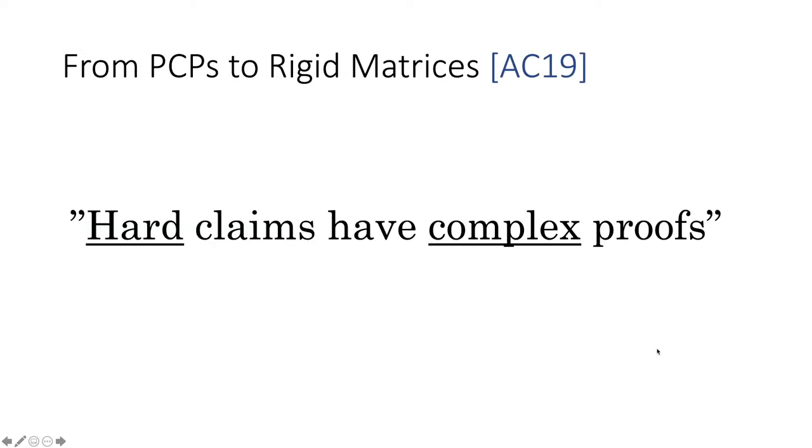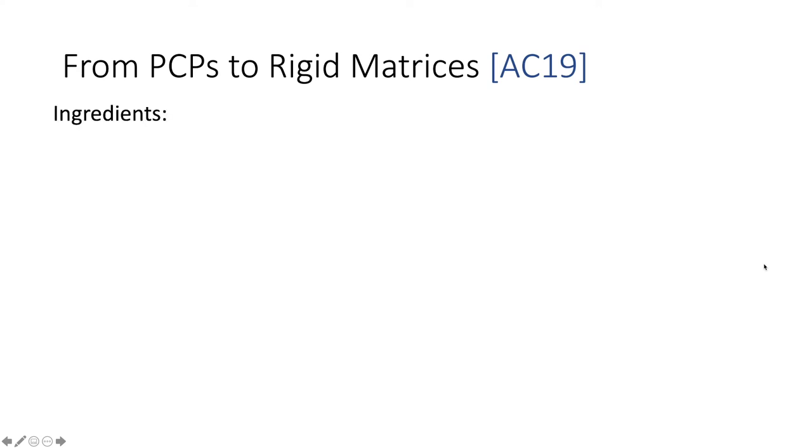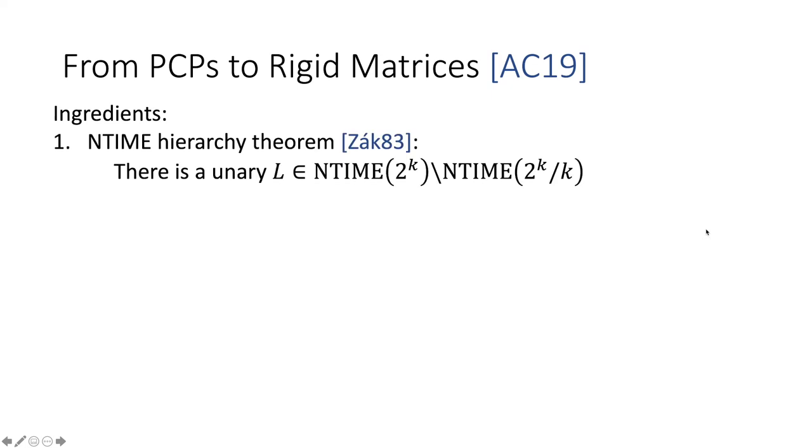So Alman and Chen, one year ago, looked at PCPs as proofs and they said this meta statement: hard claims have complex proofs. What is hard, we'll talk about in a moment. But the complex proofs here will be PCPs, and they're complex because they are rigid. We'll think of proofs as matrices, and these matrices, we argue, are rigid. Still in the Alman-Chen paradigm, we need three ingredients.